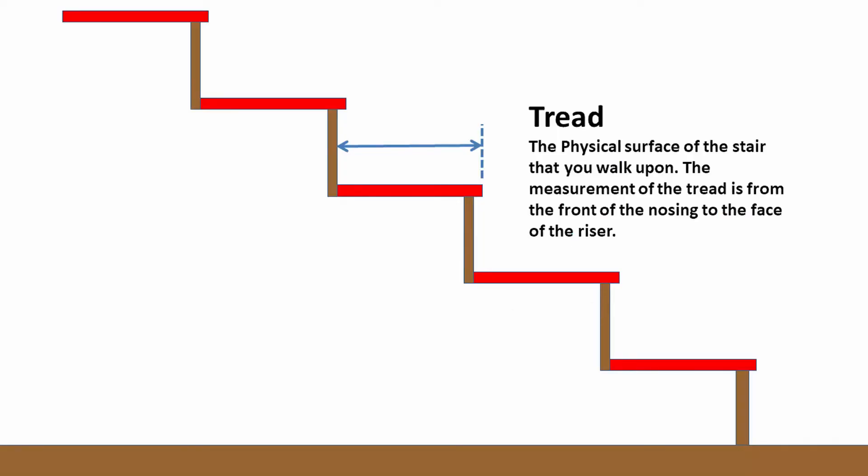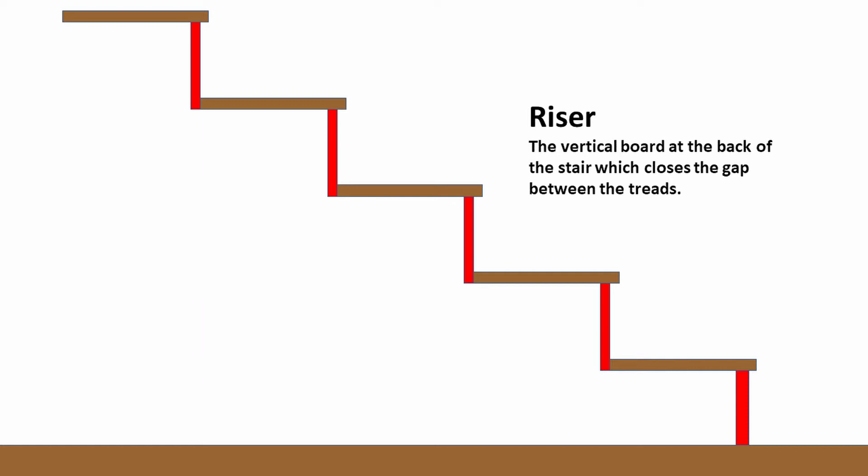There are a number of key terms we need to understand to design or think about stairs. Looking at a stair in section, the highlighted piece in red is the tread — that's the physical surface of the stair that we stand on or walk on. The measurement of the tread is from the front of the nosing, the thing you see right at the front, to the face of the riser at the back. Opposing that is the riser itself, which is the vertical board at the back of the stair that closes the gap between the treads.